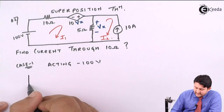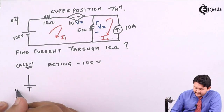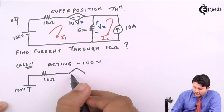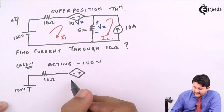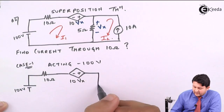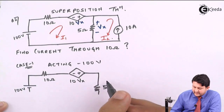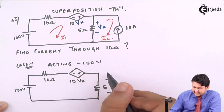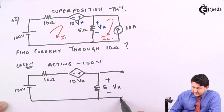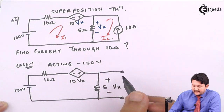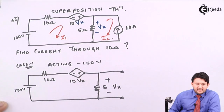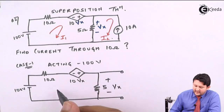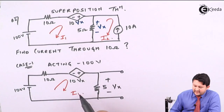So let's draw the Case 1 circuit. You have 10Ω, then the independent 100V voltage source, then the dependent voltage source 10Vx, and then 5Ω with Vx across it. Since the current source is open-circuited, you neglect that loop — no current flows through it. So you have only one loop, with one unknown current I1.